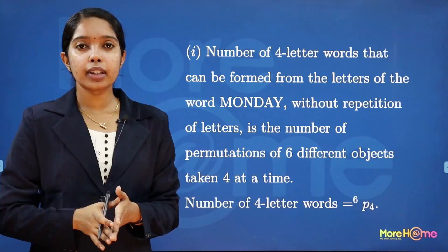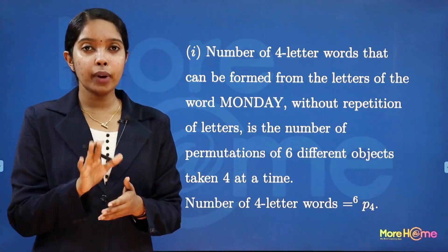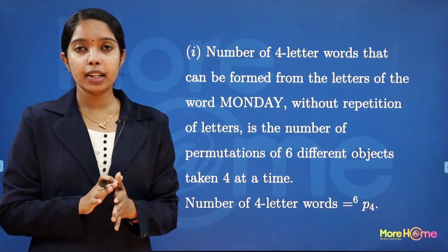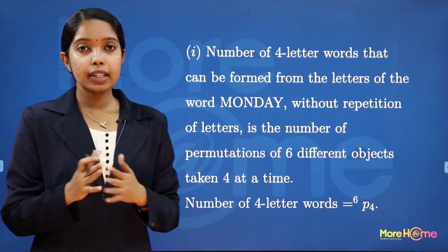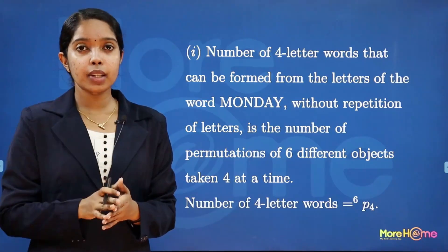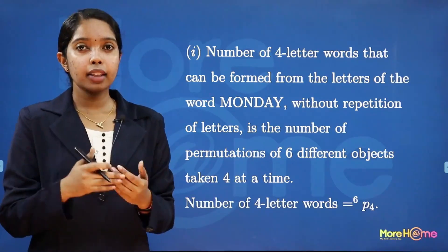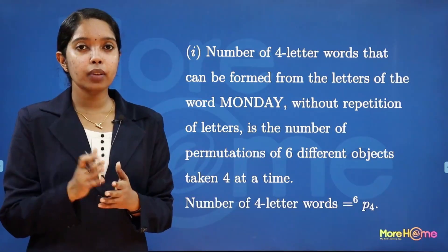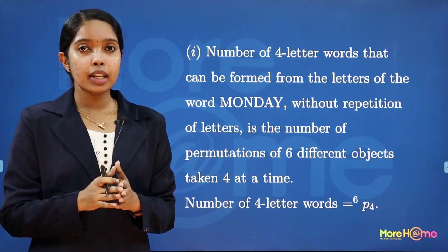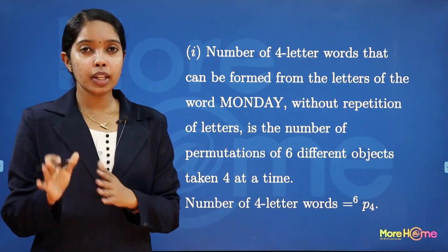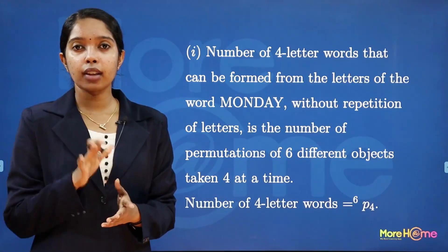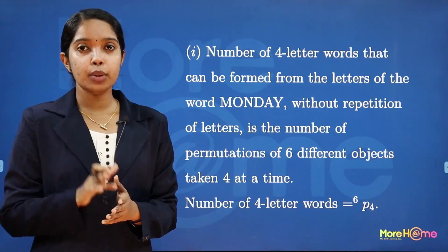So, in the first case, there are six letters: M-O-N-D-A-Y. There are six different letters. When you use four letters at a time, how many four-letter words can be formed? The total number of letters is six, so N equals six. At a time you use four letters, so R is equal to four.